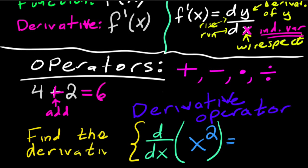That's why it's called an operator — because it's telling you to do something. You would find the derivative of x squared, which ends up being 2x.